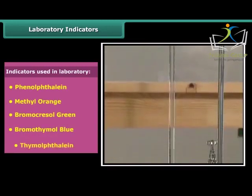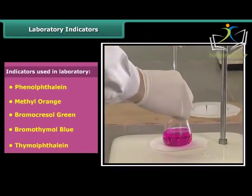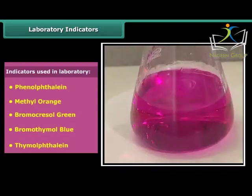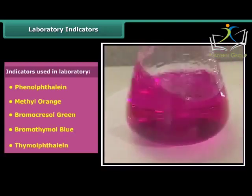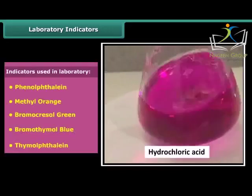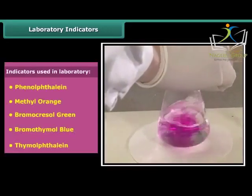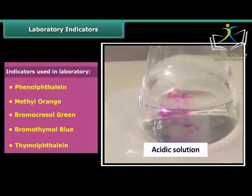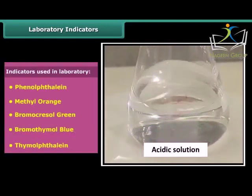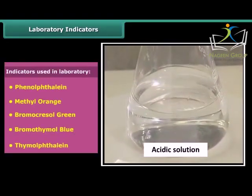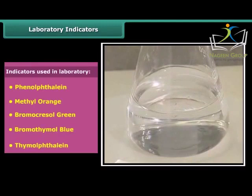After some time, the pink color slowly appears in the solution. When we add more sodium hydroxide, the pink color becomes brighter. On adding a drop of hydrochloric acid, this solution again becomes colorless. So phenolphthalein appears pink in alkaline solution and colorless in acidic solution. It is colorless in neutral medium.